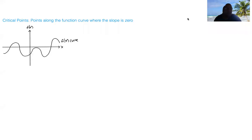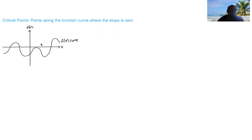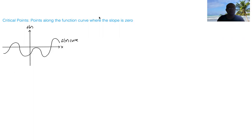What's going on everyone? In today's session, let's go over critical points. Let's first talk about critical points in terms of just a curve — the general curve of some function f of x, which is what is represented here. When we're talking about critical points, all we're talking about are points along this curve where the slope is zero.